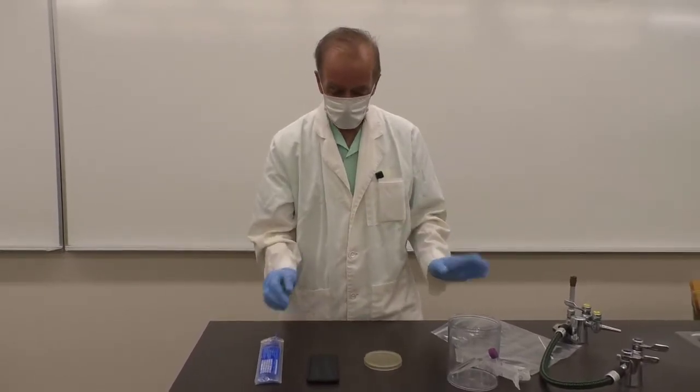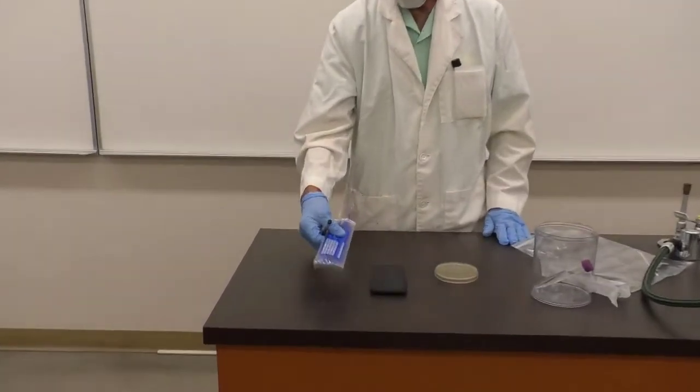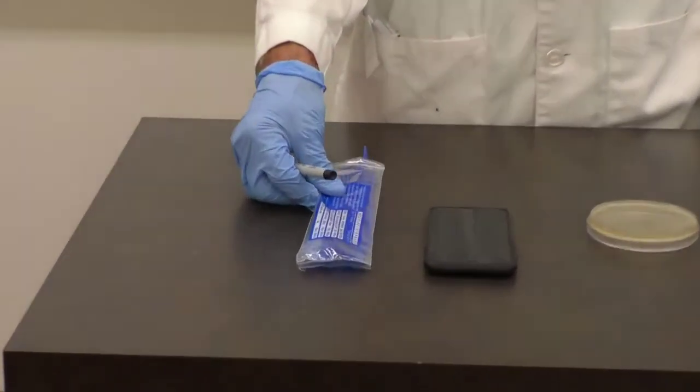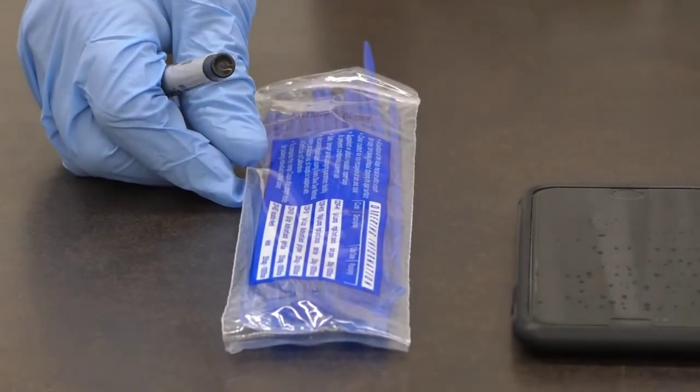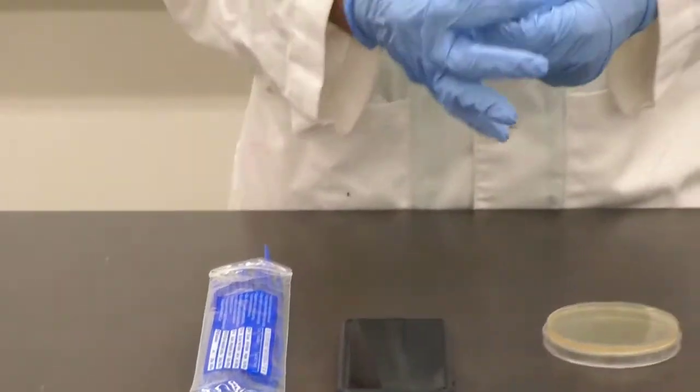Now, for making a streak plate from this, you have a package of 25 or so sterile inoculating loops. And unlike the metal inoculating loops, these loops, since they're plastic, can only be used once.